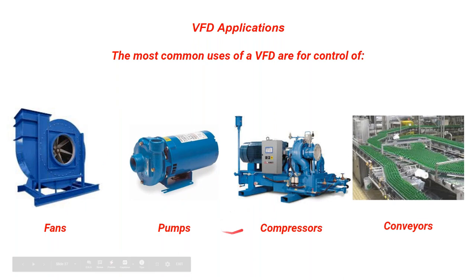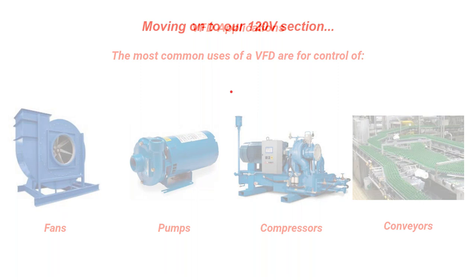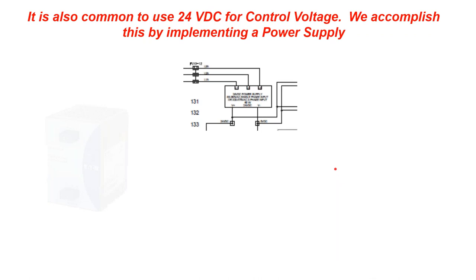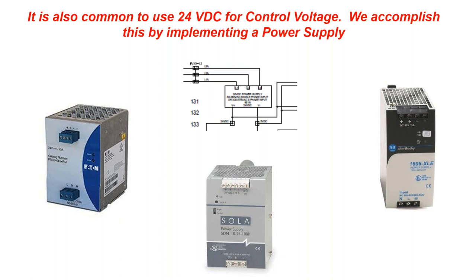For example, with a conveyor carrying bottles, starting abruptly could knock them over, as could stopping abruptly. A VFD allows you to ramp up and ramp down the conveyor speed smoothly. Moving on: the 120V section of the panel — derived from the transformer — powers things like receptacles or panel air conditioning units to keep the panel cool. We also have 24VDC control voltage, obtained using a power supply, which is what was used in the earlier video with the push button and light.